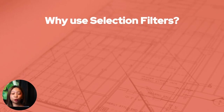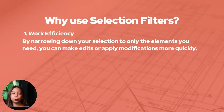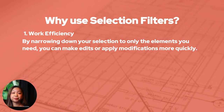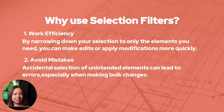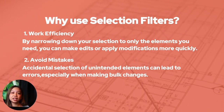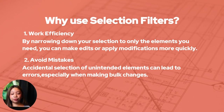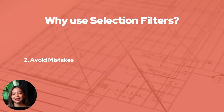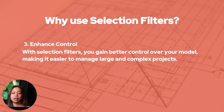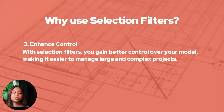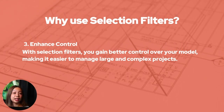There are three main reasons to use selection filters. First, work efficiency: by narrowing down your selection to only the elements you need, you can make edits or apply modifications more quickly. Next, avoid mistakes: accidental selection of unintended elements can lead to errors, especially when making bulk changes. Selection filters help prevent this by focusing your selection on specific elements. Lastly, enhanced control: with selection filters you gain better control over your model, making it easier to manage large and complex projects.